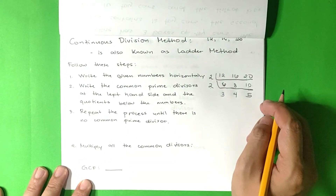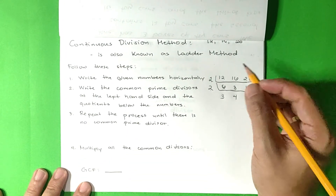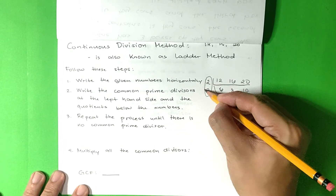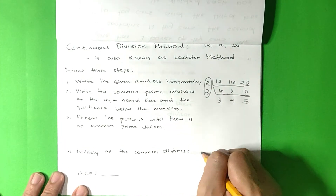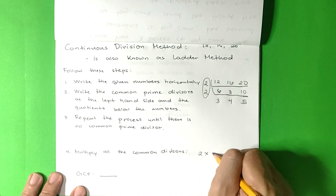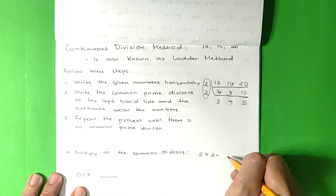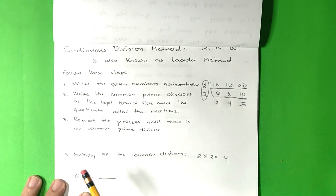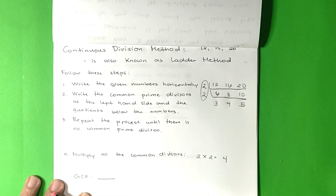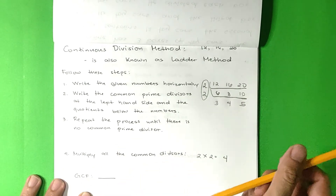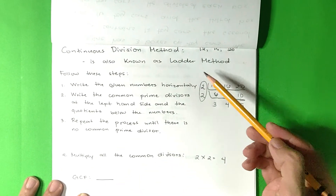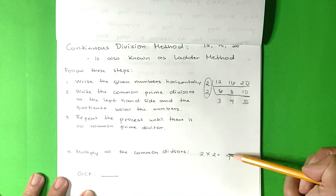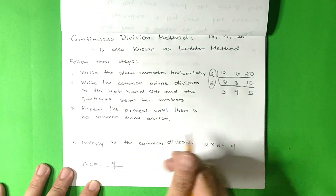Step 4: Multiply all the common divisors. 2 times 2 is 4. So the GCF, or greatest common factor, of 12, 16, and 20 is 4.